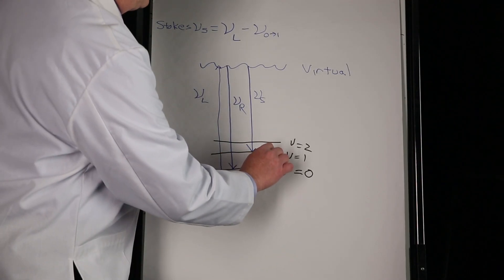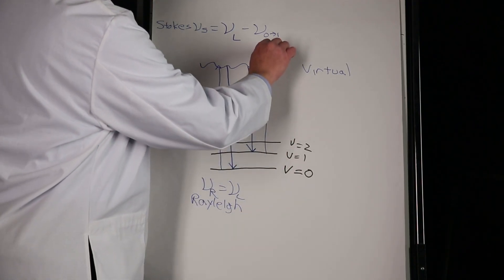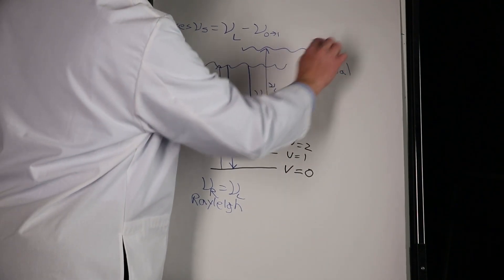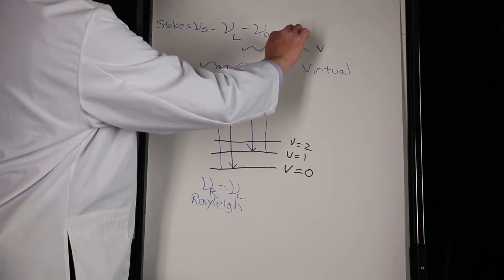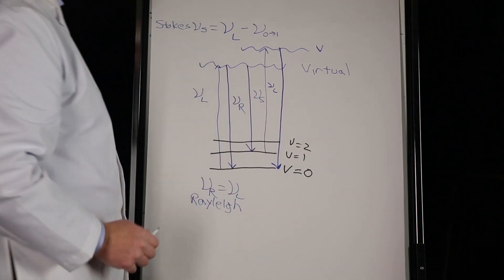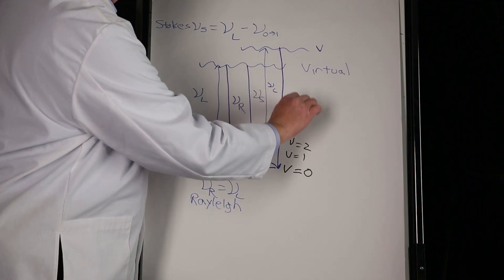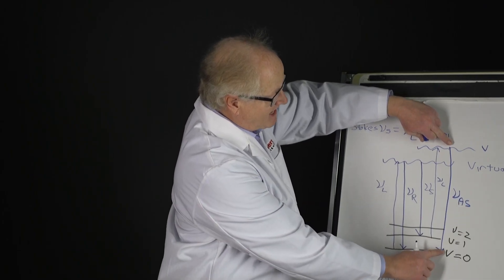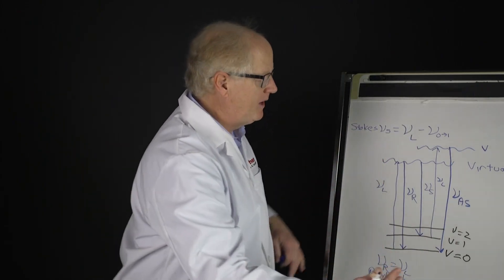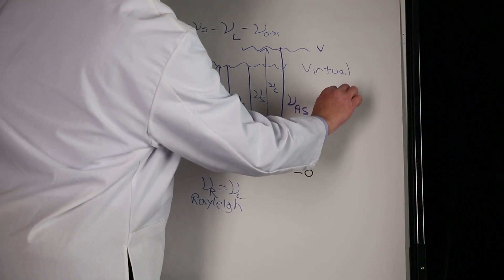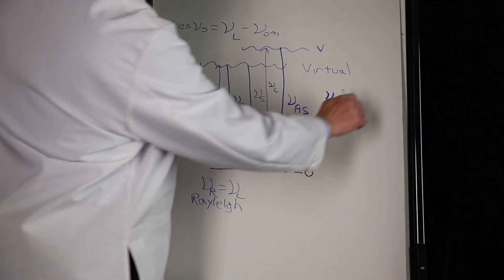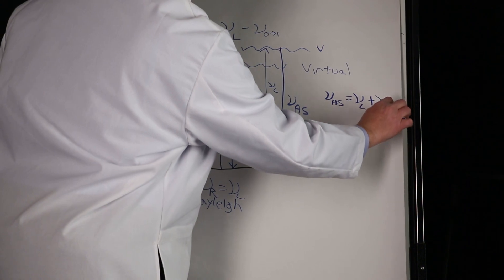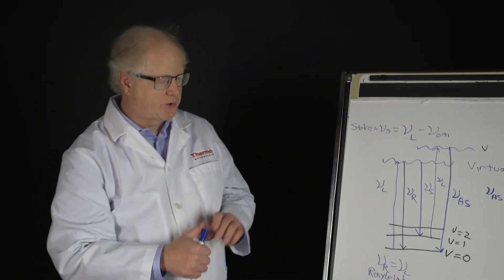Now it is also possible for the molecule to initially start out in an excited state. That is νL again—it's the same νL—but since there's a spacing here, it actually goes to a higher virtual state, and from that higher virtual state, the molecule can then scatter all the way back to the ground state. Notice in this case, and we'll call this νAS, that this photon, which is called an anti-Stokes photon, is higher in energy than the energy that came in because the molecule gave up some energy. So if we look here, we have the νAS—this energy is equal to νL in this case plus the energy zero to one.